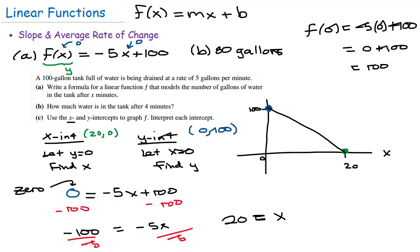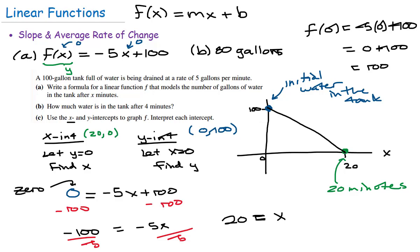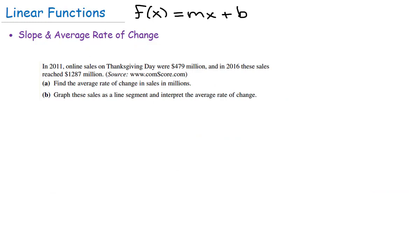Interpreting the intercepts: the y-intercept (0, 100) represents the initial value — the initial amount of water in the tank, which was 100 gallons. The x-intercept (20, 0) tells us that after 20 minutes, the y value — gallons of water in the tank — is zero. So after 20 minutes, the tank has been completely drained.